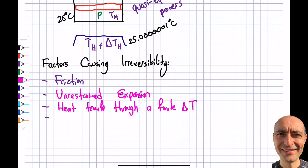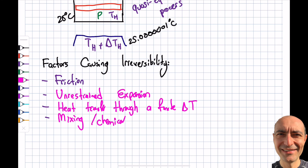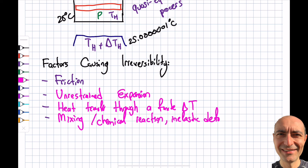Other factors include mixing — if you mix two fluids they won't unmix themselves. Chemical reactions in the system are also irreversible. And inelastic or plastic deformation: if a material undergoes plastic deformation the shape changes permanently and cannot be restored. I'll stop here and pick up the Carnot cycle next, which will tell me the maximum efficiency I can get. Thank you for watching.